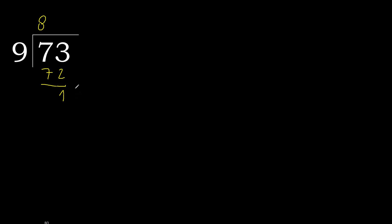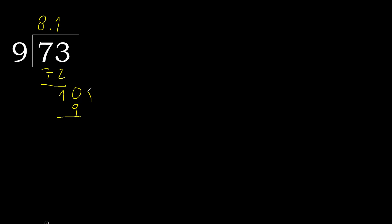Always complete with 0. Here, with point. Complete — point. 10. 9 multiply by 2 is greater. Multiply by 1 is 9, is not greater.